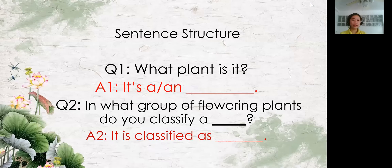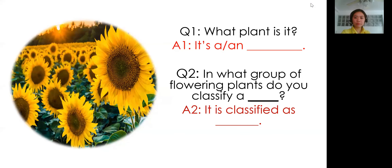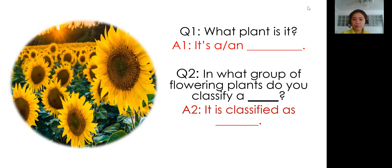I have two questions. The first is: the teacher will ask 'What plant is it?' — your answer should be 'It's a/an ___.' The second question: 'In what group of flowering plants do you classify a ___?' — your answer should be 'It is classified as ___.' Let's try: What plant is it? It's a sunflower! In what group of flowering plants do you classify a sunflower? It is classified as dicotyledons. Great job!